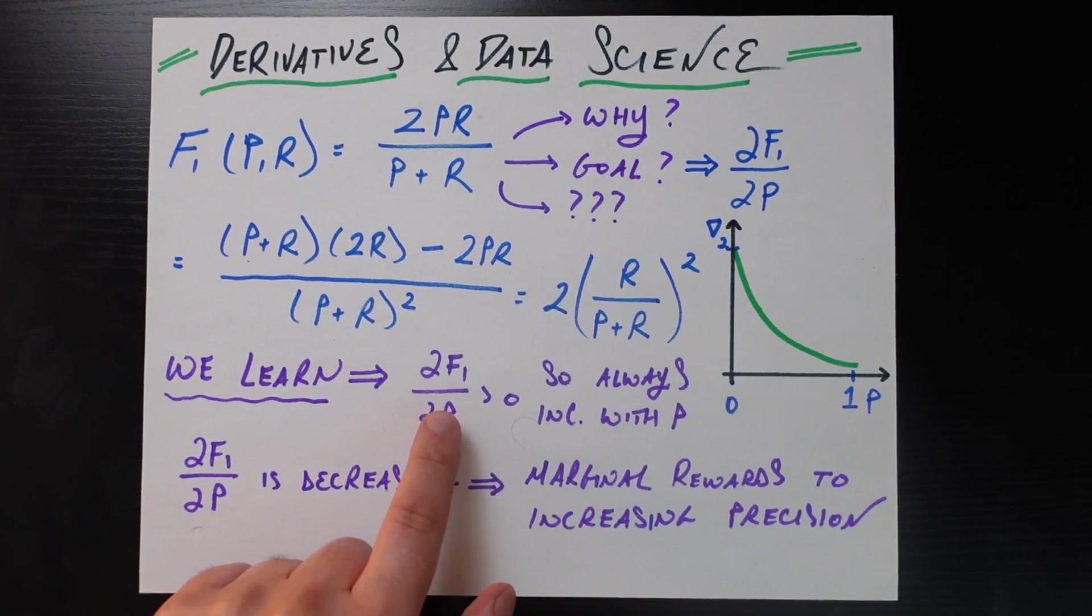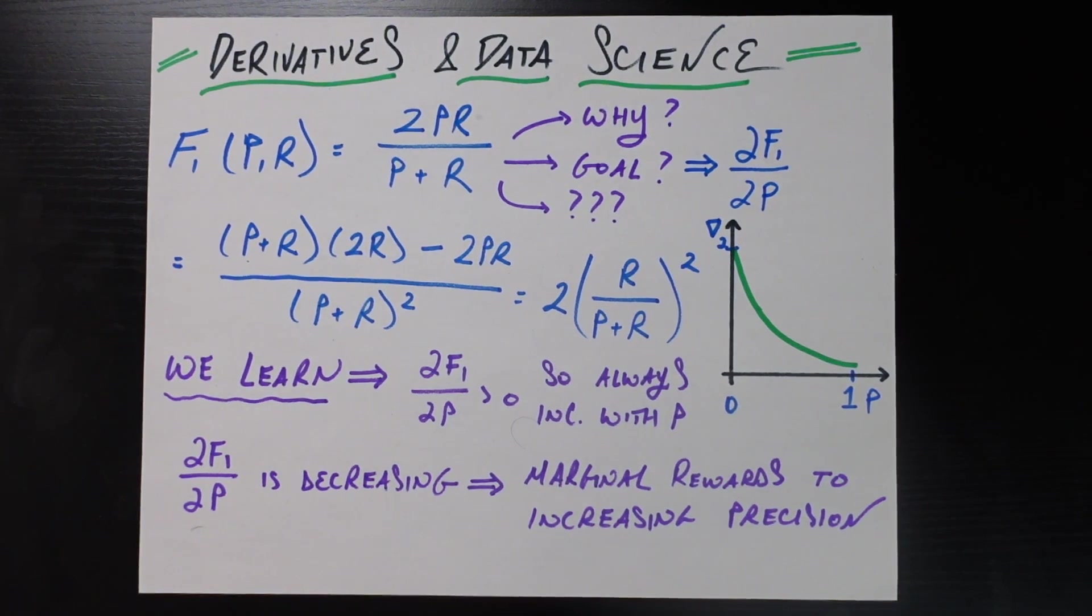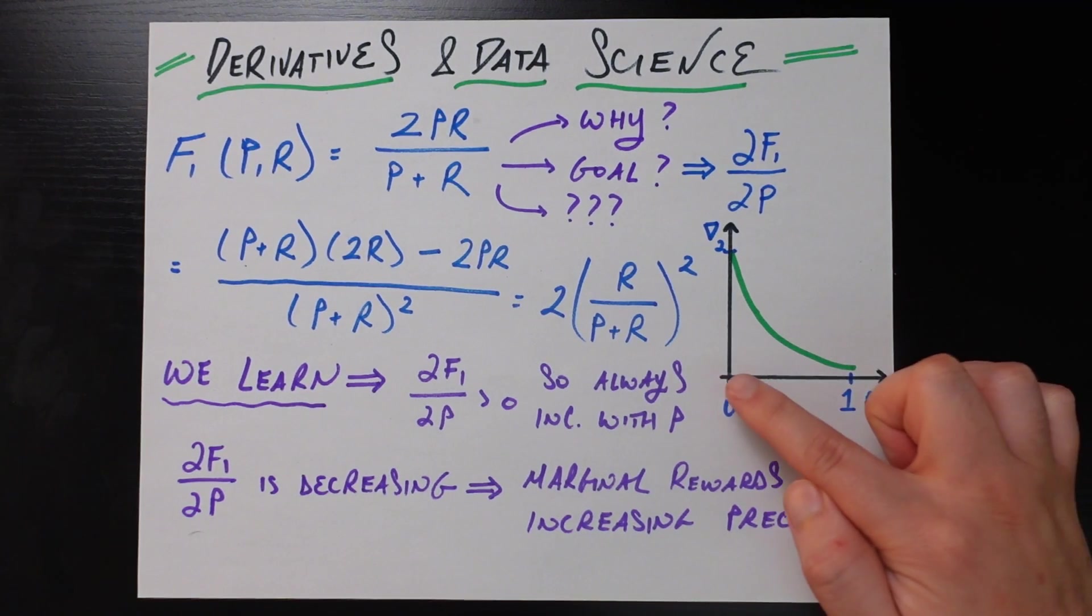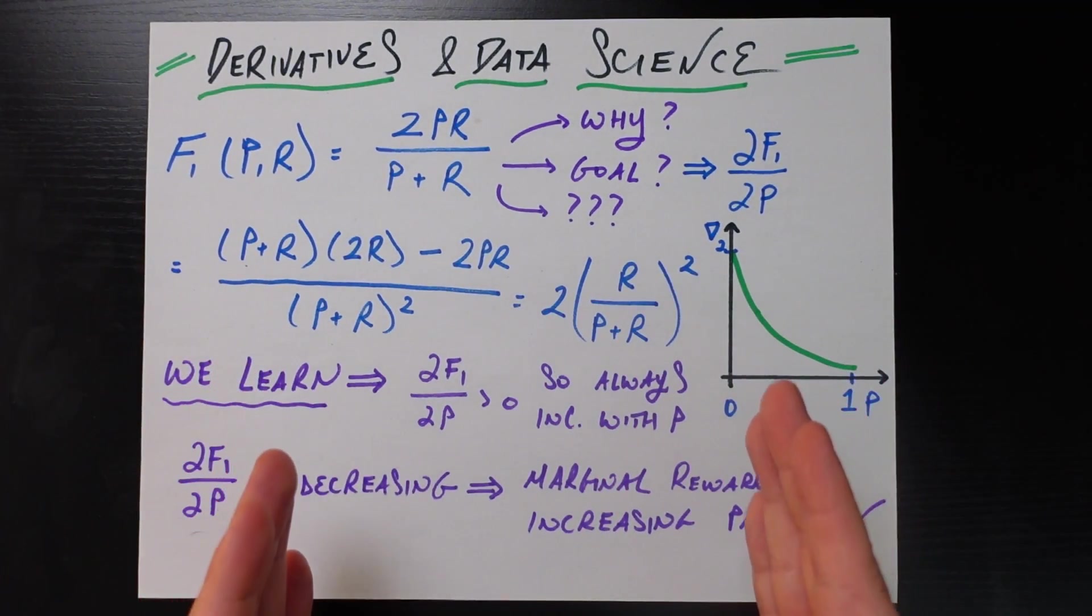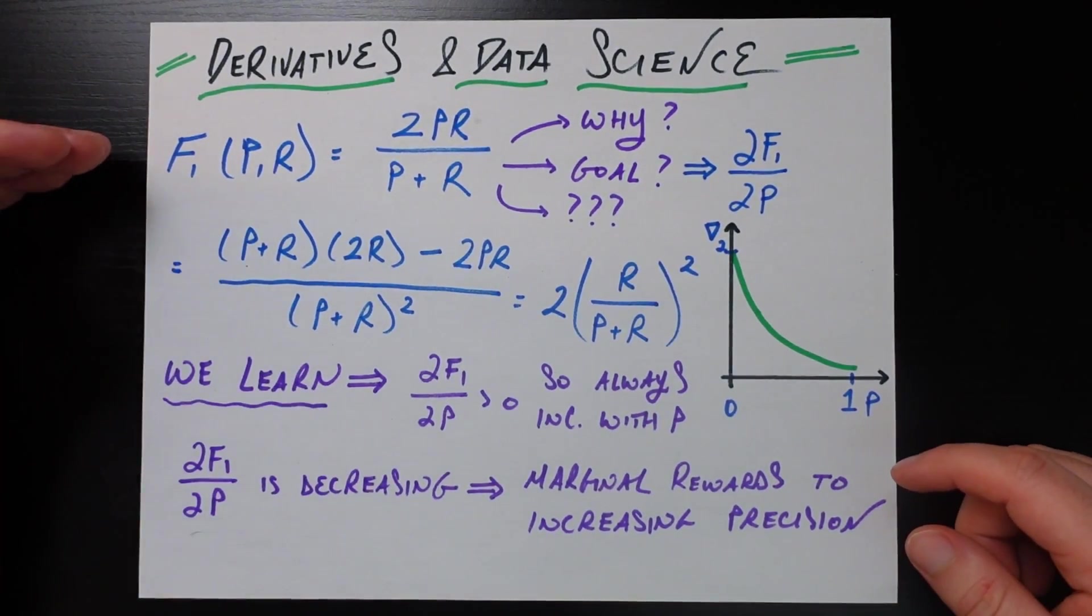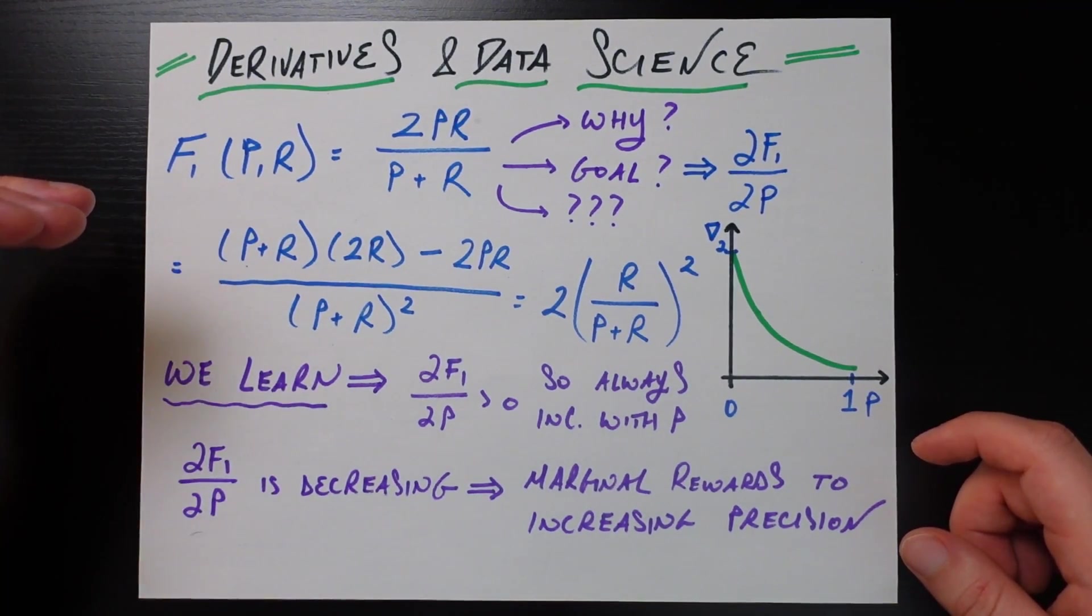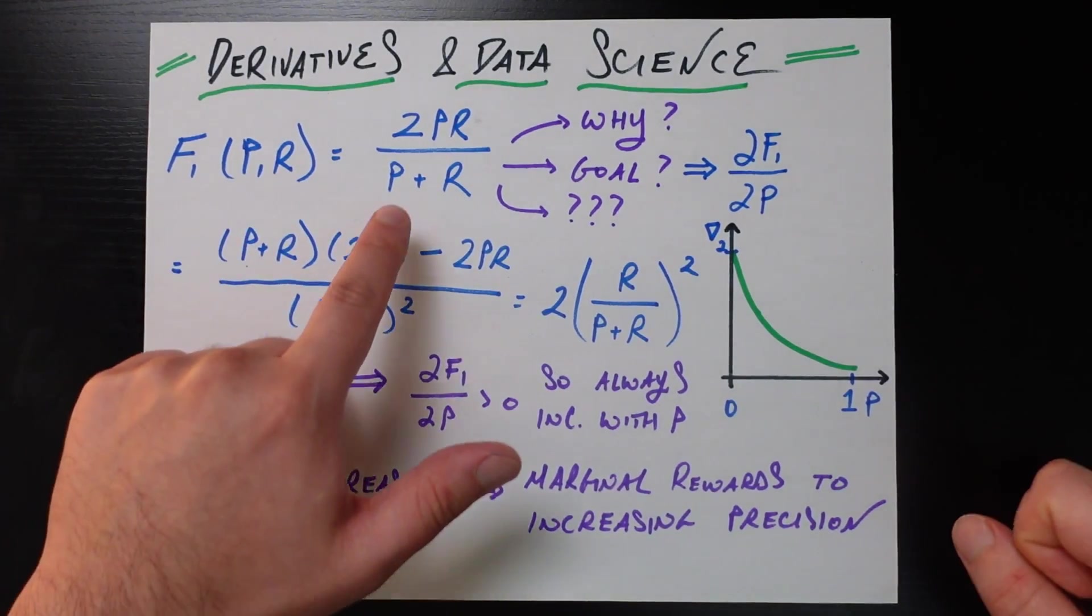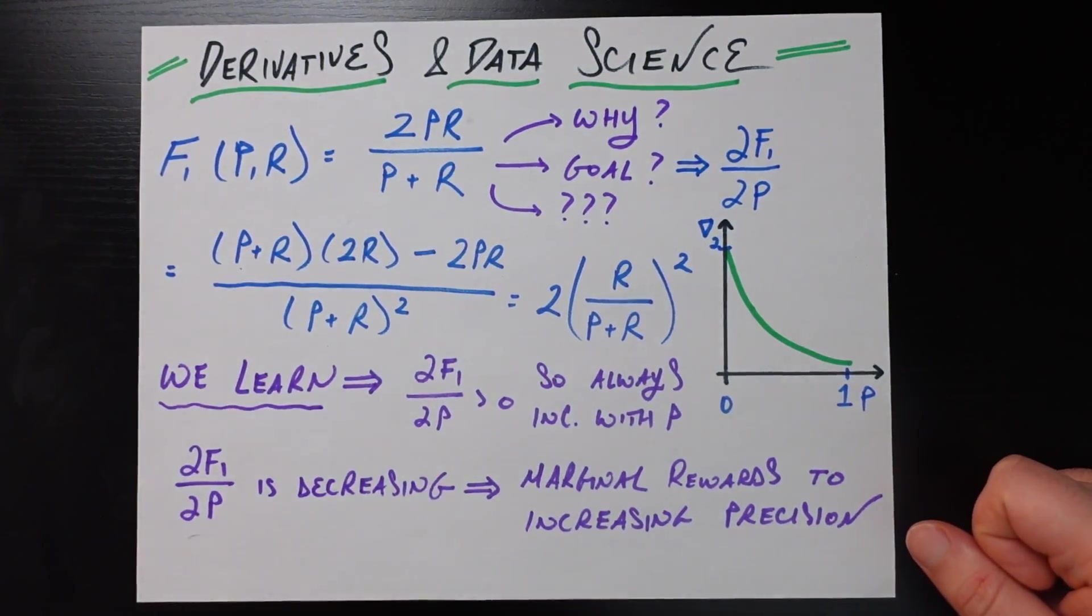So these are the two things we learned. How do these two mathematical findings translate into helping us more fully understand what this original form of F1 score was actually trying to capture? Well, that first finding, which is that the derivative of F1 score with respect to precision or with respect to recall for that matter, is always greater than zero, is always positive. What that means is no matter what the precision is, for an incremental increase in precision of one extra delta unit, we're always going to get an incremental increase in F1 score.